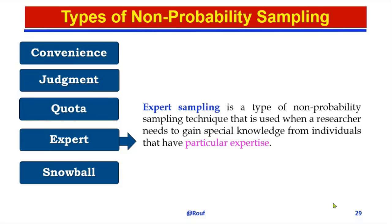The fourth type is expert sampling. Expert sampling is a type of non-probability sampling technique that is used when a researcher needs to gain special knowledge from individuals who have particular expertise in a subject.